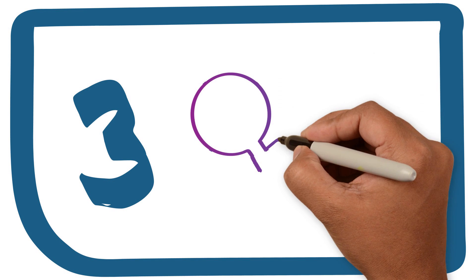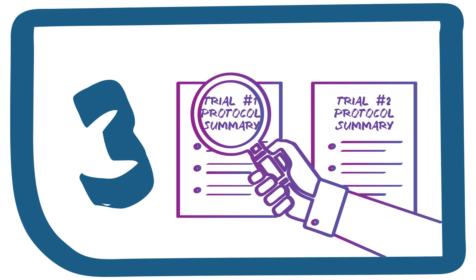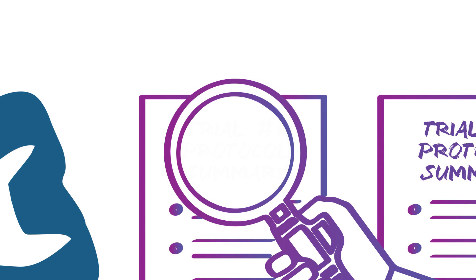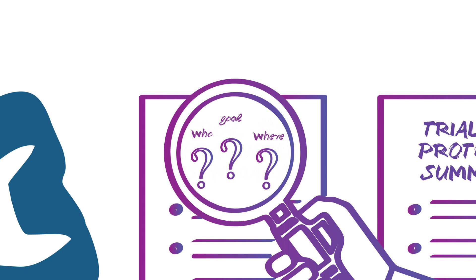Once you have found trials that may fit your medical situation, the guide explains how to take a closer look at each trial's protocol summary. A protocol summary contains information about who's eligible to join the study. It also describes the goal of the trial and where the trial is taking place.